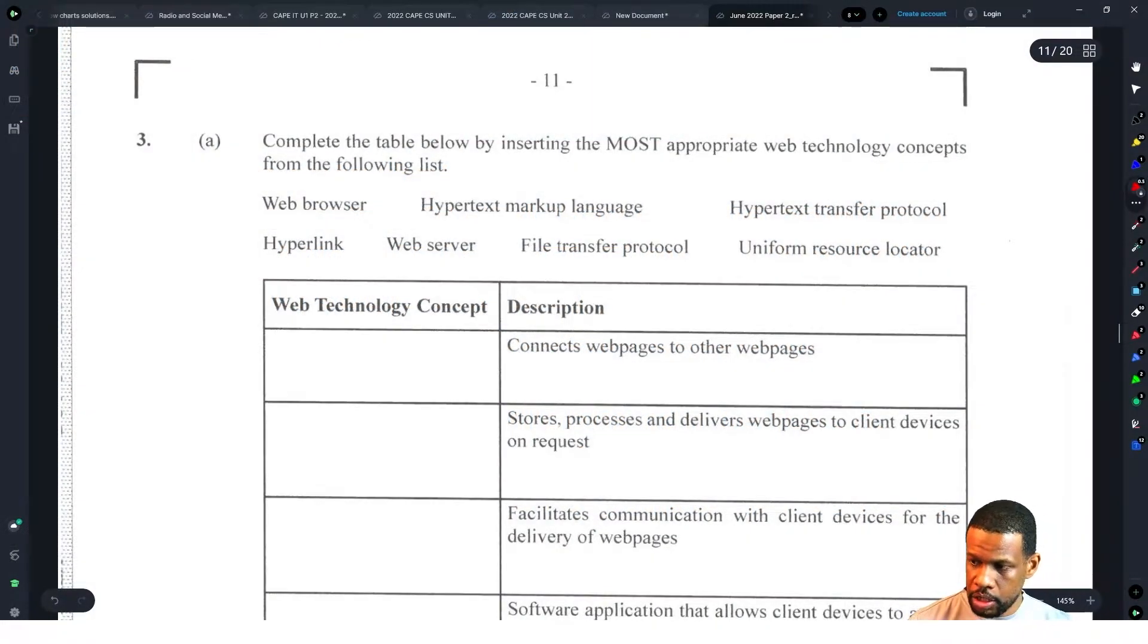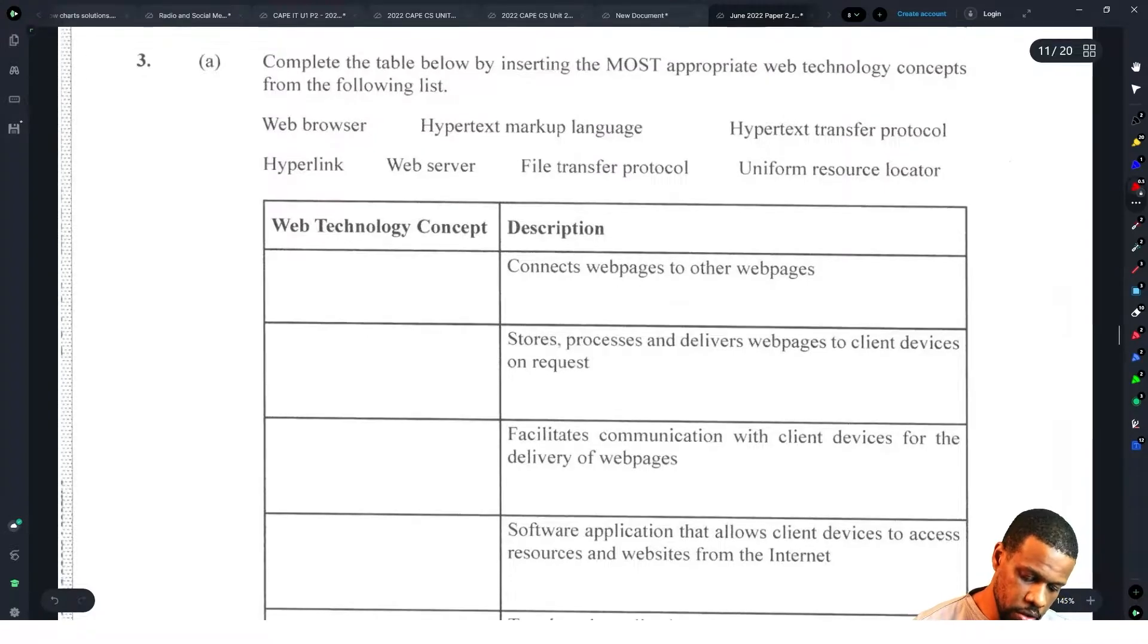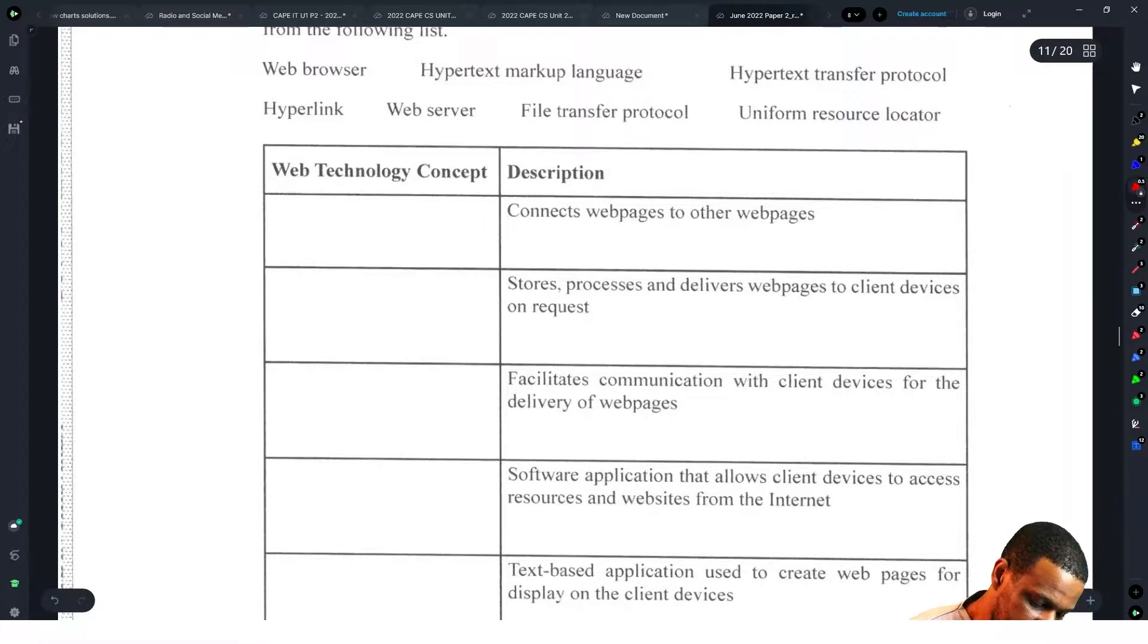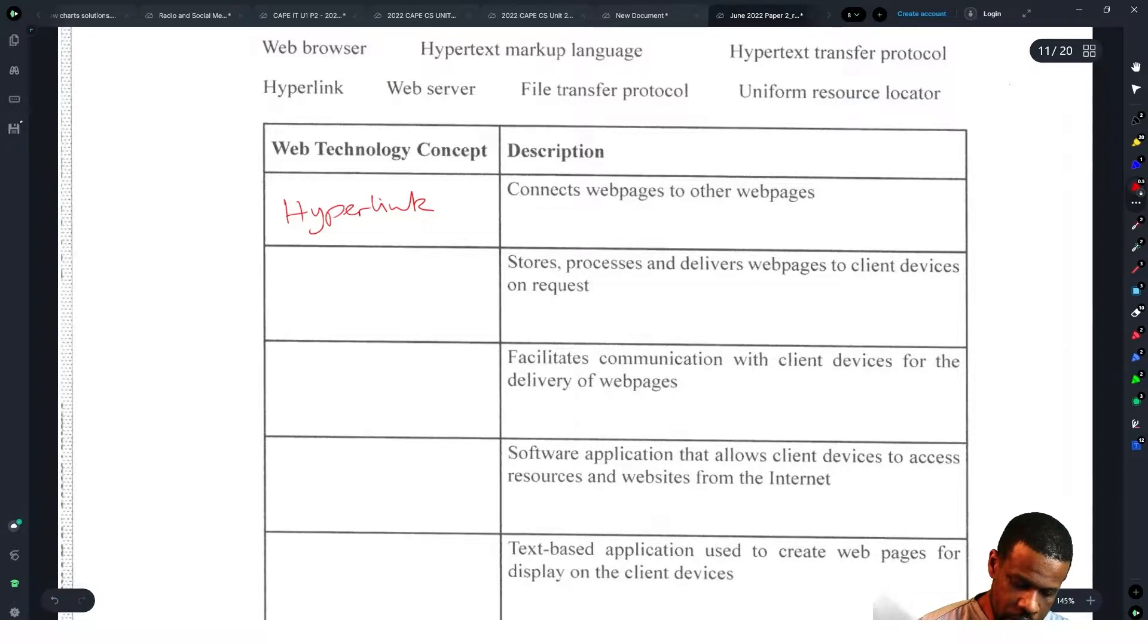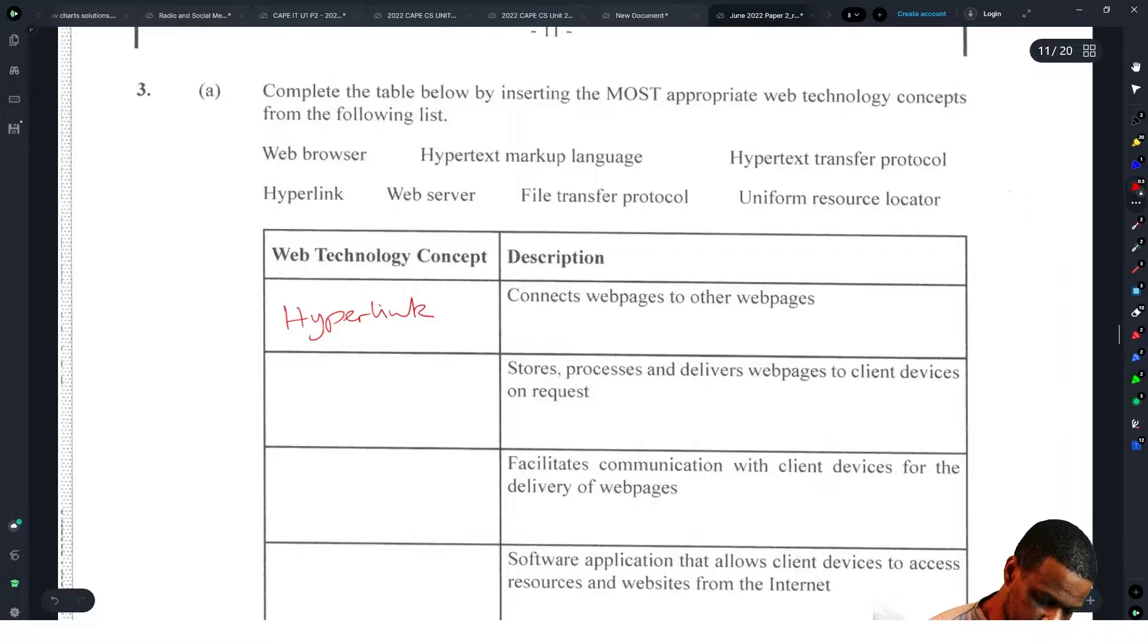Question number three: complete the table below by inserting the most appropriate web technology concepts from the following list. Connects webpages to other webpages - hyperlink. We already used hyperlink. Stores, processes and delivers webpages to client devices on request - that's web server.